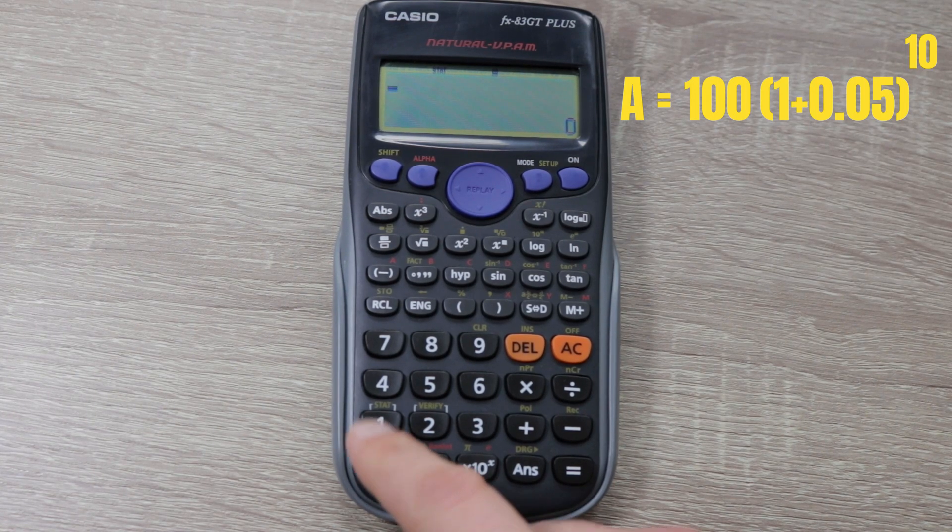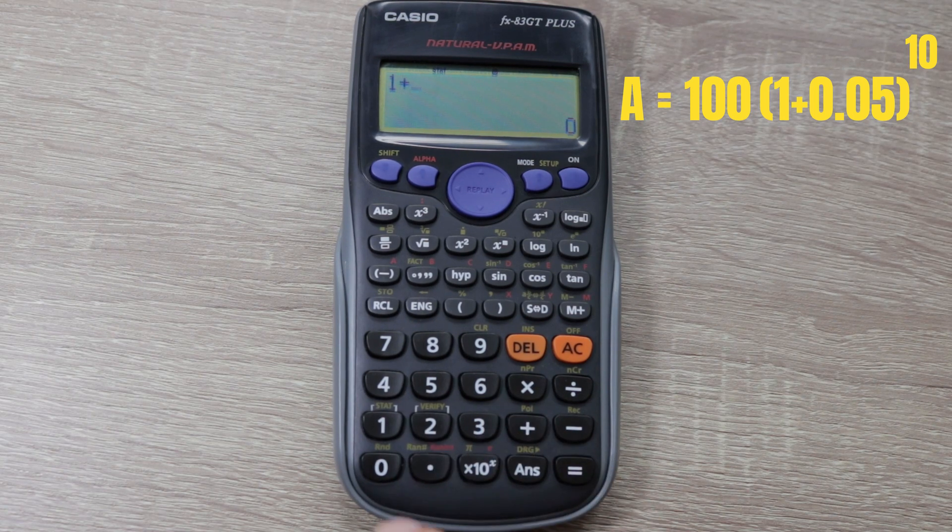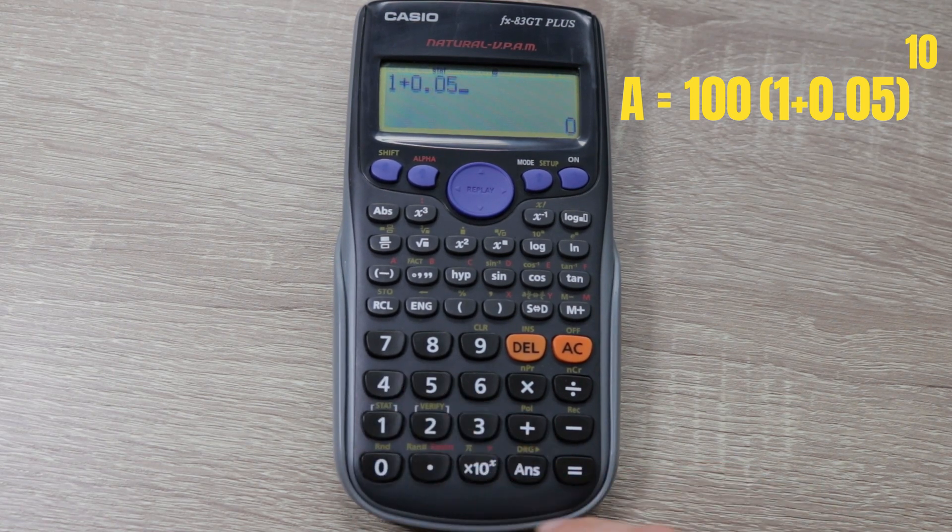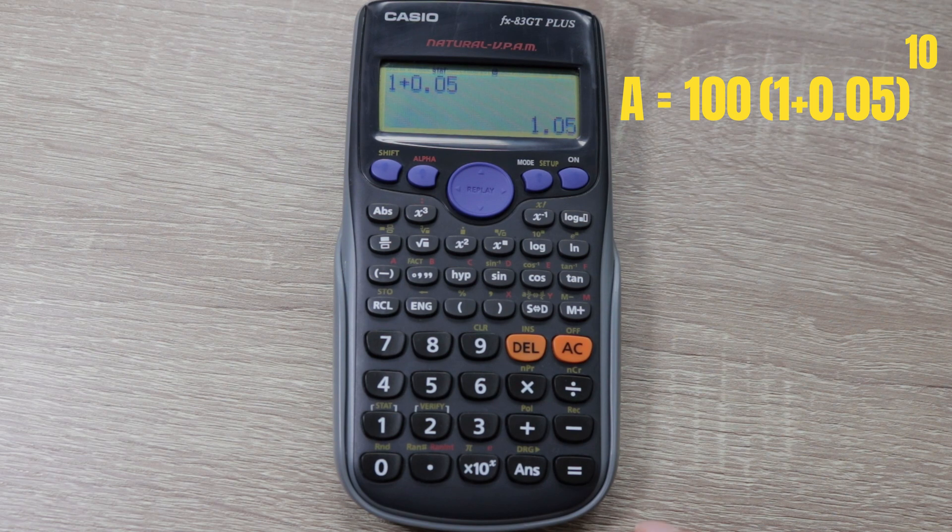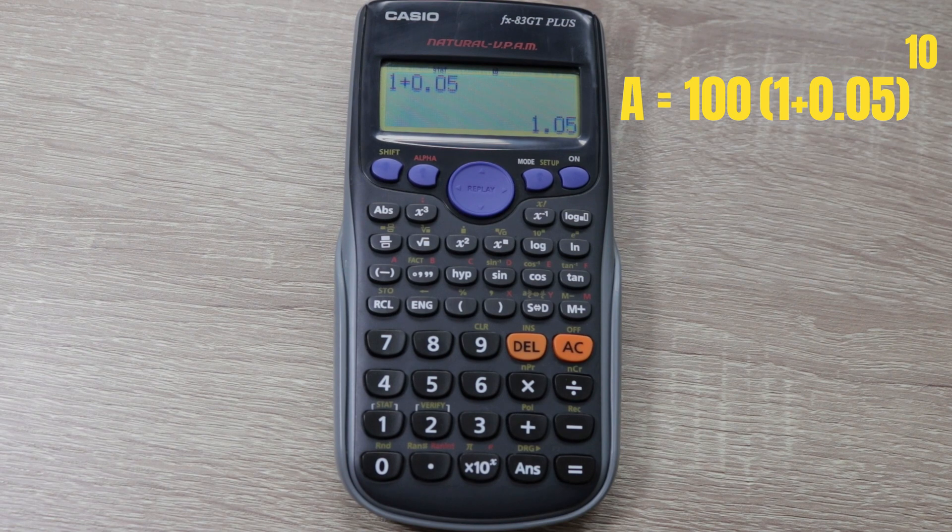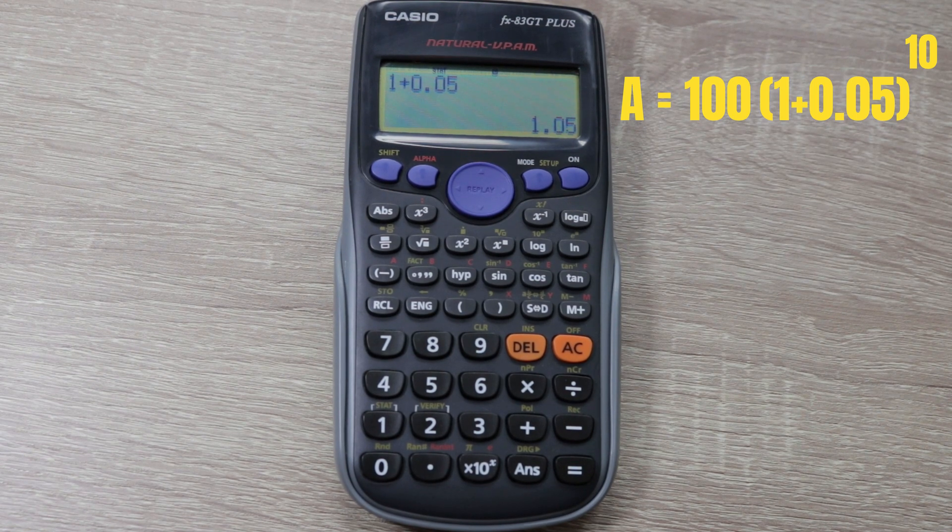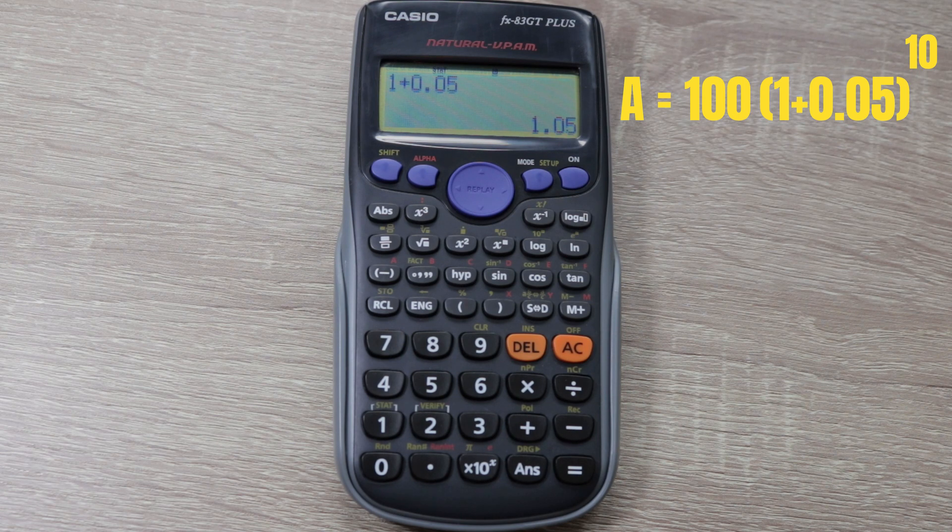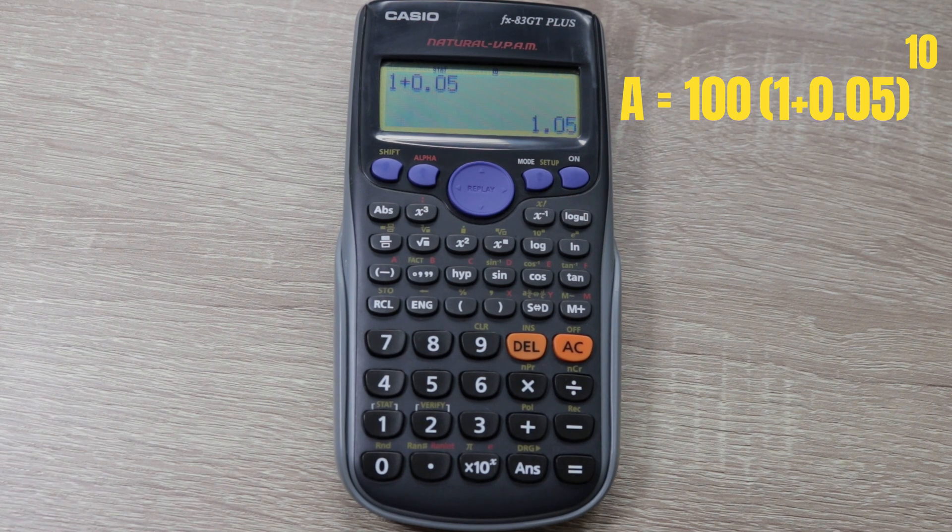We work out the element in the brackets first. So we'll take 1 plus 0.05 equals 1.05, and then we need to compound that by our 10 years. So we're doing £100 invested and it's compounding at 5% per year for 10 years.